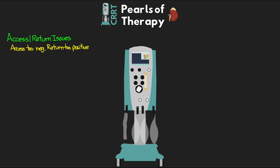Patient positioning can sometimes cause access and return issues. If the line is in the IJ, check upper body position, the position of the limb, and head and neck. For femoral access, check lower body position and make sure the leg is not bent and nothing is pressing on the line. Sometimes a couple of good flushes can do the trick. Also make sure you're flushing the lines well when disconnecting or doing a filter change. Some facilities pack lines with heparin or citrate — know your facility's process and make sure you withdraw that before connecting. If all else fails, advocate for a new line in a new location.